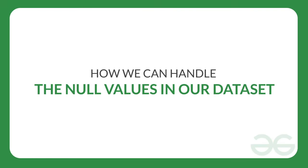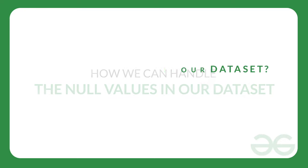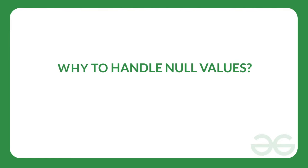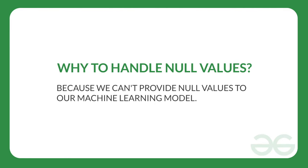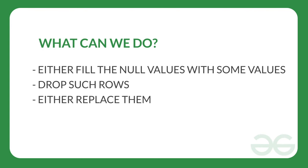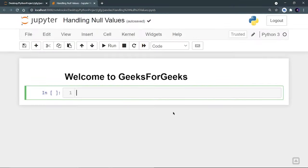Hello everyone, welcome to GeeksforGeeks. In this video, we are going to see how we can handle the null values in our dataset. Sometimes our dataset contains some empty cells and those cells we call null values, and we have to handle those null values because we can't provide null values to a machine learning model. We can either fill these null values with some value, drop such rows, or replace them. We are going to see a few methods to handle these null values.